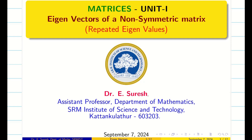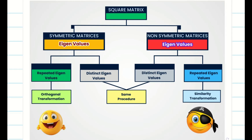Dear students, welcome to this session. Today's session is a little different. In all our previous sessions, we were dealing with symmetric matrices, and today we are going to deal with non-symmetric matrices — specifically, how to find eigenvectors for a non-symmetric matrix when the eigenvalues are repeated. This is the roadmap for our unit 1.